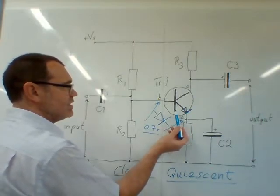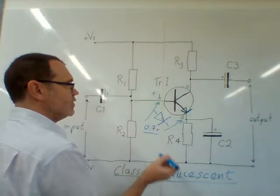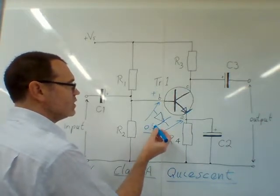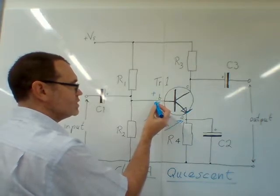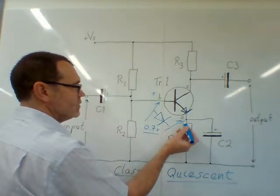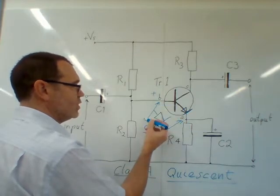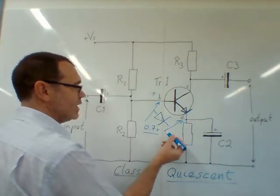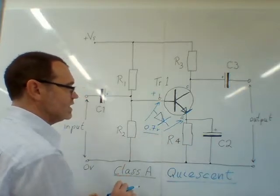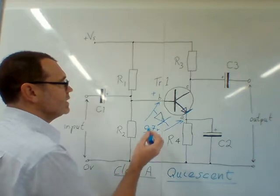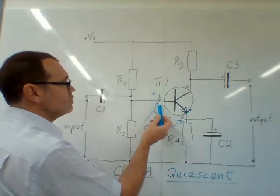As this is an NPN transistor, it requires positive on the base to turn it on, so we can say that the meter would show the base was more positive than the emitter. The base was positive with respect to the emitter, so the red probe of the meter would go on the base and the black probe on the emitter, and we would expect to see 0.7 of a volt there.